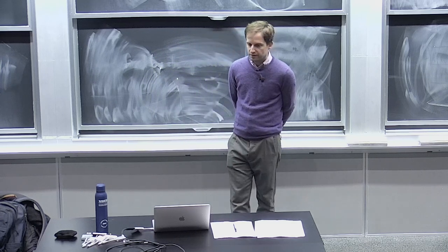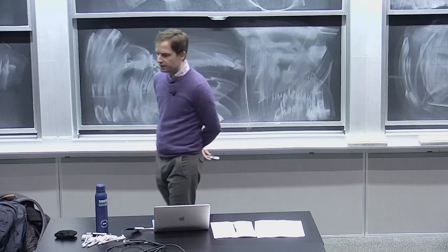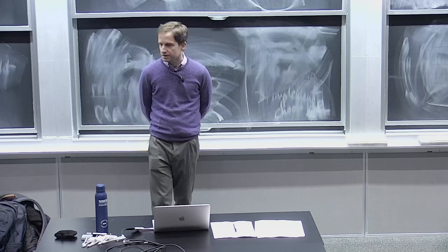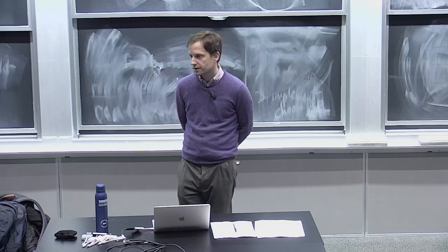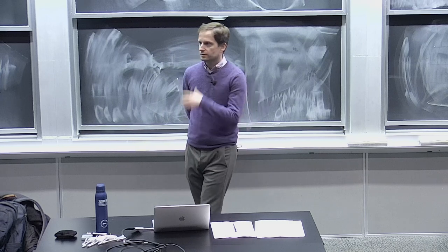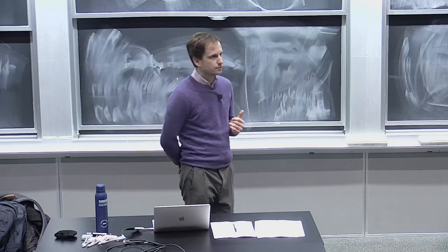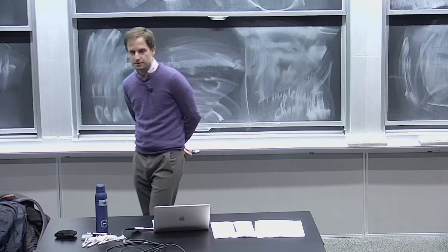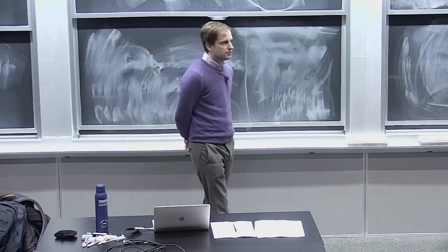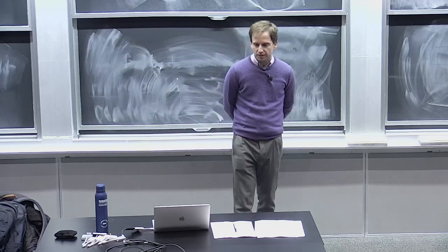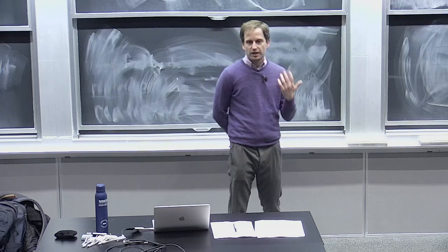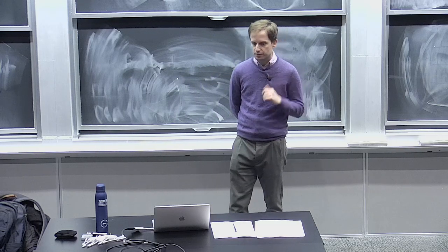You can think about lots of different things using expected utility — for example, investment behavior and finance. When assets are more volatile, you need to be offered a higher return to invest in those assets. There are lots of useful applications in finance. You can also think about criminal behavior: the risk of getting caught, what happens when that risk goes up, people engage in less crime, and so on.